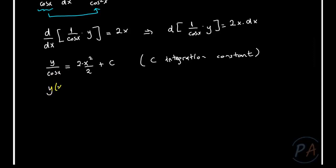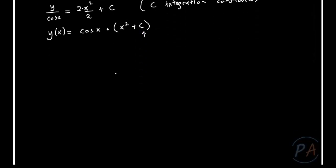Solving for y, I obtain y(x) = cos(x)·(x² + C). This is the general solution of the differential equation, but I need to determine C using the initial data.